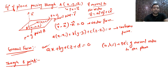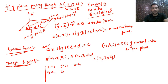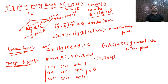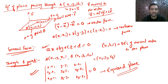If a plane passes through three points A(x₁,y₁,z₁), B(x₂,y₂,z₂), and C(x₃,y₃,z₃), then the equation is obtained by evaluating the determinant: |x−x₁, y−y₁, z−z₁; x₂−x₁, y₂−y₁, z₂−z₁; x₃−x₁, y₃−y₁, z₃−z₁| = 0. The LHS gives an equation of the form ax+by+cz+d = 0, which is the required plane through all three points.